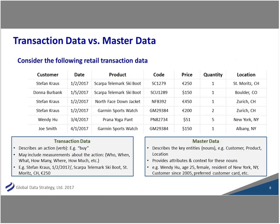Here's a more realistic example. There are lots of types of data. One common distinction is between transaction data and master data. A list of retail transactions — for instance, Stefan Kraus bought some Telemark ski boots in St. Moritz, Switzerland, and Donna Burbank bought those same ski boots in Boulder, Colorado. Transactions have a date, a time, a place, and how many were bought — they describe more of the action.